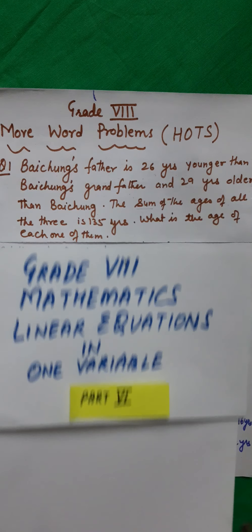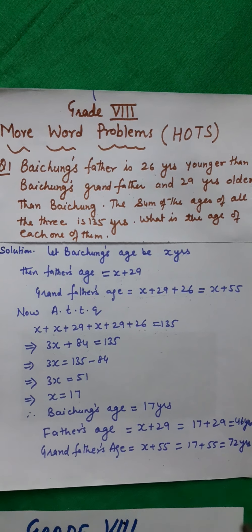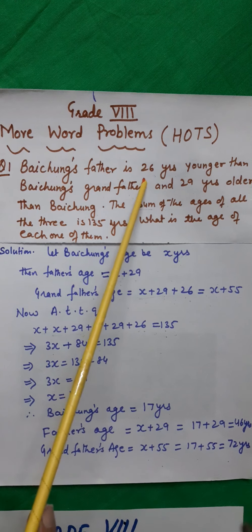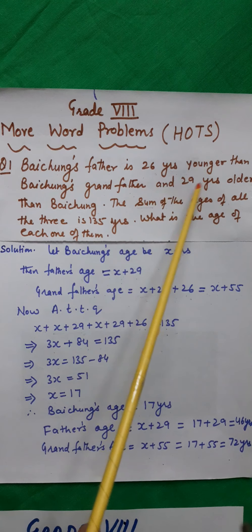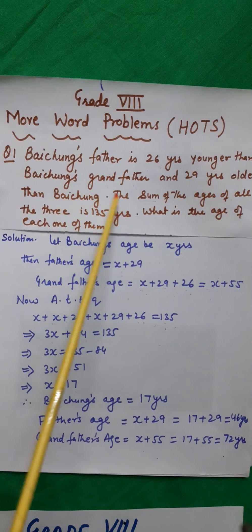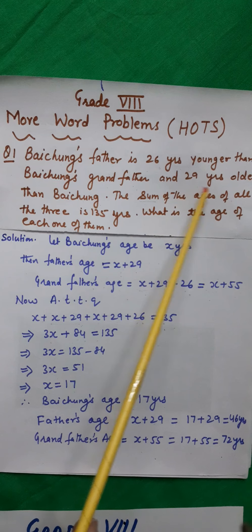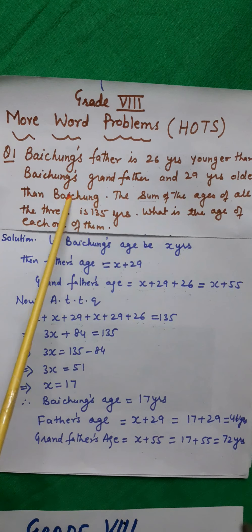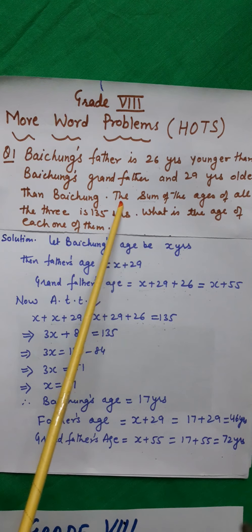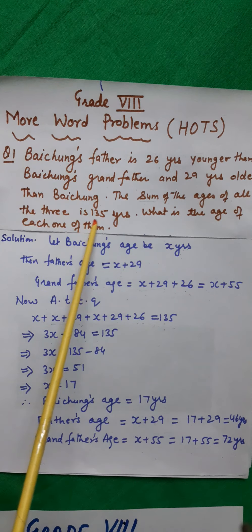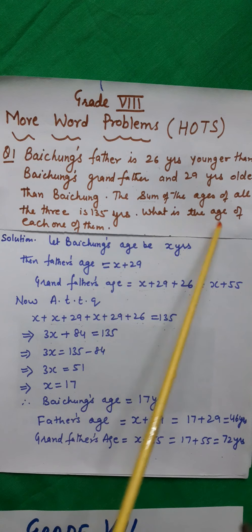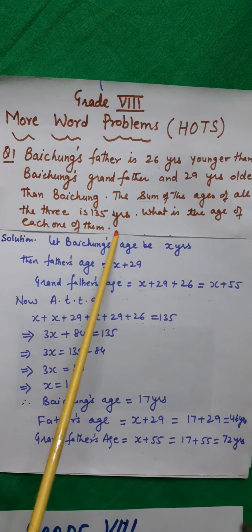Question number 1 today is: Batcham's father is 26 years younger than Batcham's grandfather and 29 years older than Batcham. The sum of the ages of all three is 135 years. What is the age of each one of them?